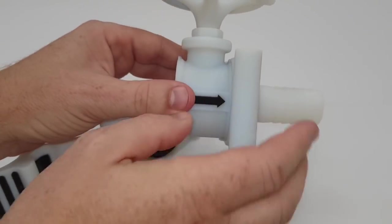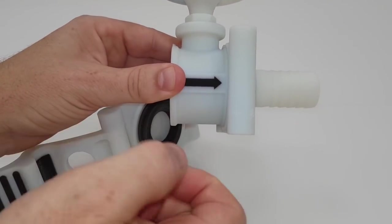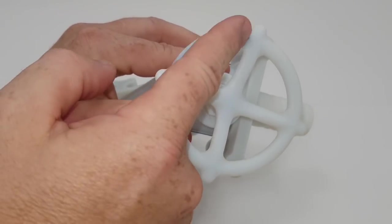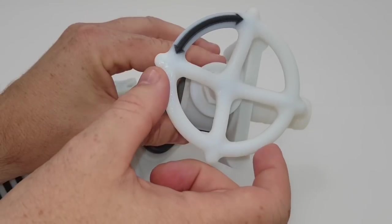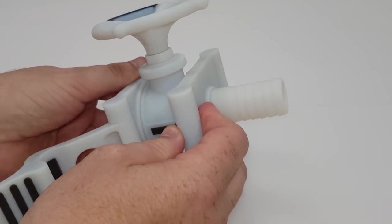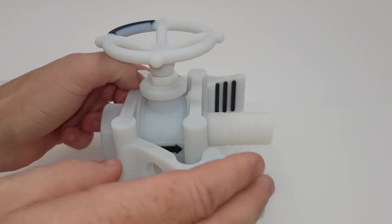We've put some instructions on the part to help people identify where the different parts of the tap need to go and in which direction you want to be turning the tap. So a very nice functional prototype here in the Digital ABS Plus material.